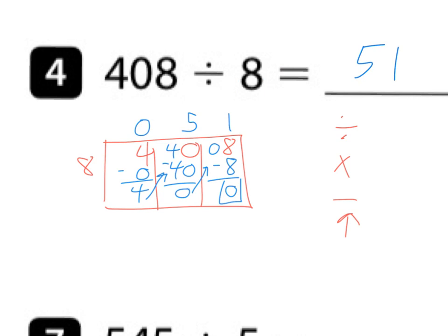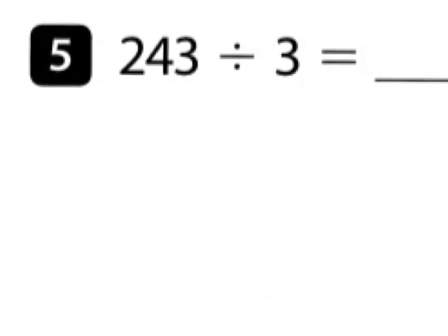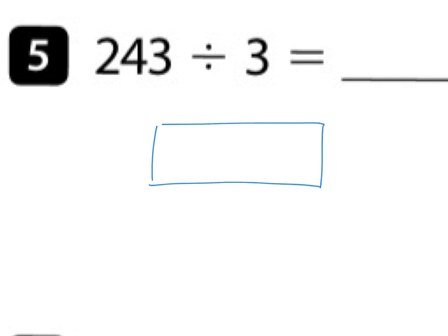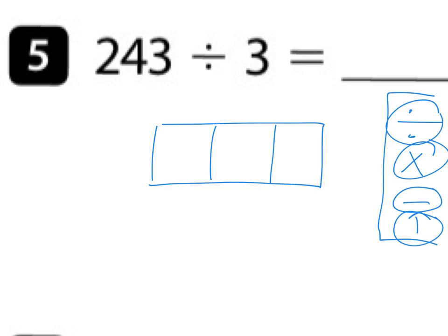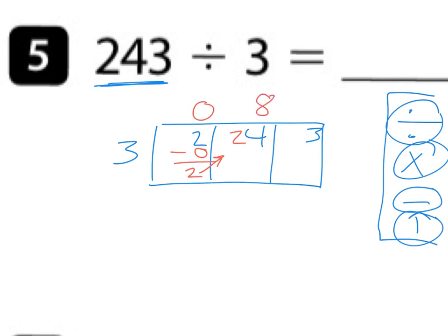Number five: 243 divided by 3. Four steps: divide, multiply, subtract, bring up. Put our dividend in the top right corner — three numbers, three boxes. Divisor goes out here. 3 goes into 2 zero times, 0×3=0, subtract, bring up. 3 goes into 24 eight times, 8×3=24, subtract, bring up zero. 3 goes into 3 one time, 1×3=3, subtract — remainder zero. So 3 groups of 81 equal 243.